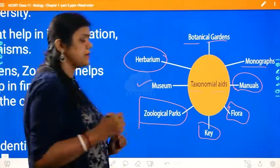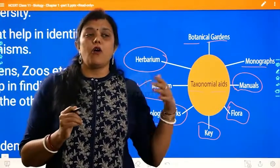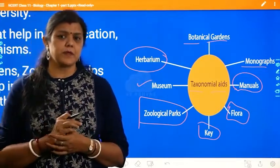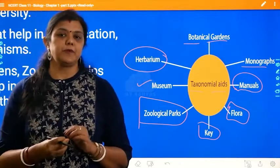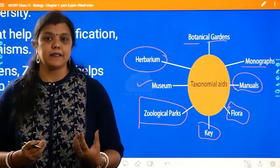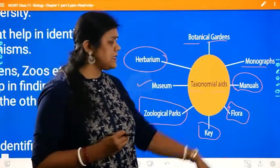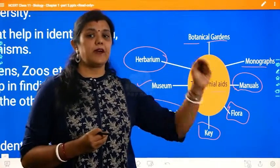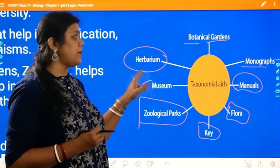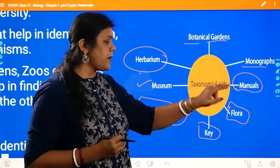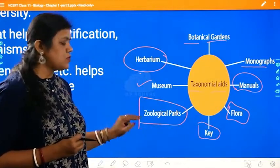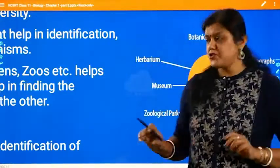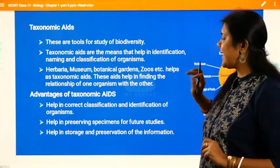A museum is a place where organisms, fossils, specimens of species, and discoveries are preserved properly so that for study purposes we can visit and collect required information. All of these — herbarium, botanical garden, monographs, manuals, flora, key, zoological park, and museum — are called taxonomic aids. They help in identifying, classifying, and naming organisms.